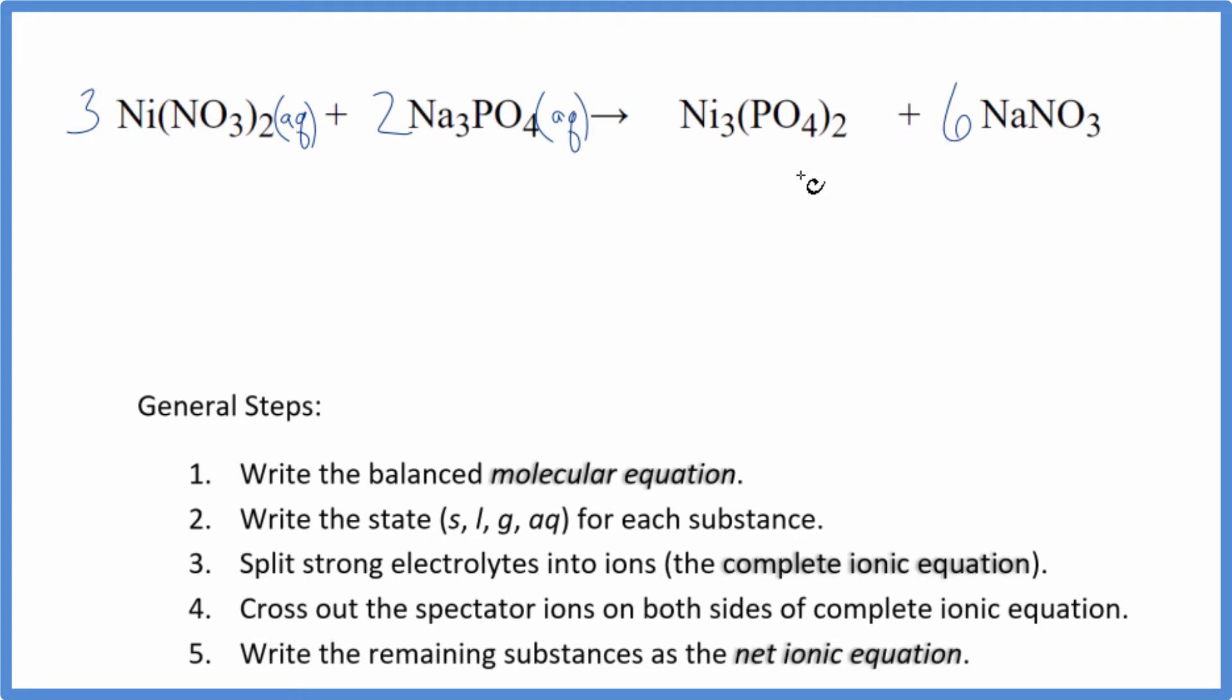And we said phosphates in general are insoluble, especially when bonded to transition metals here. So nickel(II) phosphate, it's going to be insoluble. That means it's going to be a solid. When these two react, it forms that solid that falls to the bottom of the test tube. This is a precipitation reaction. So we have our solid here. And we said nitrates are very soluble, put an aq. So we have the states here for our net ionic equation.